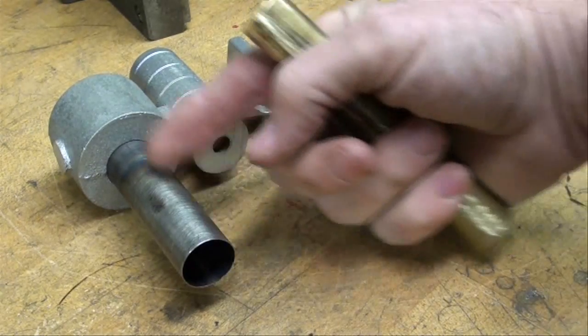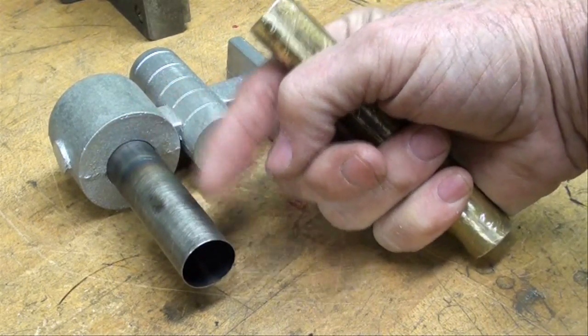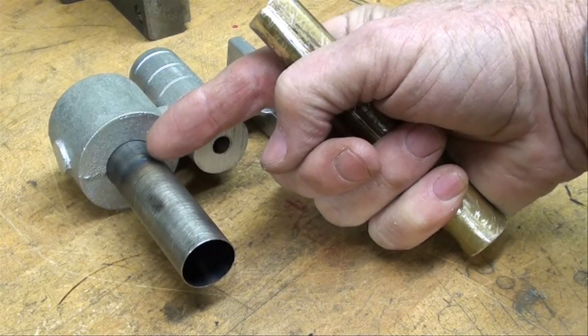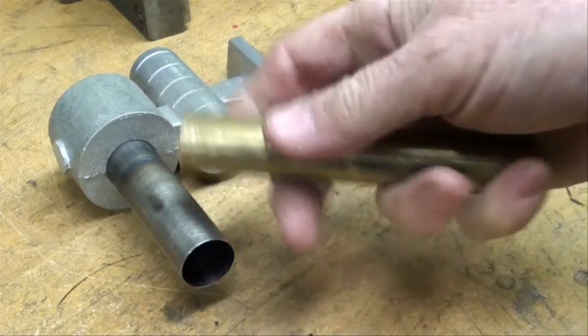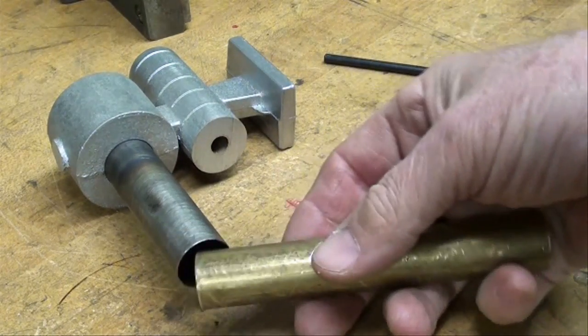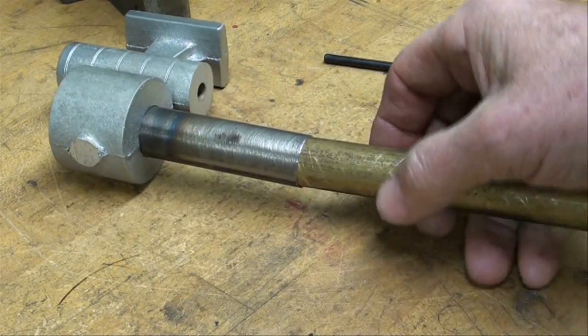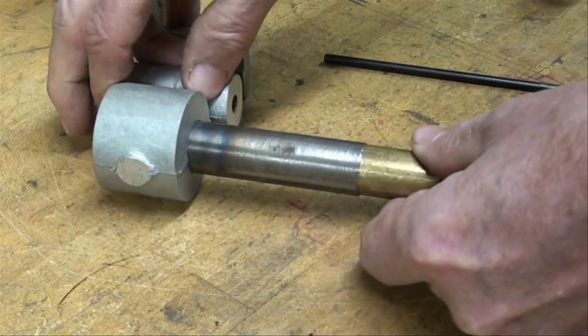I'm going to need to hold this in a vise and I don't want to crush this tubing. This is very thin wall tubing. In fact, that's part of an old push broom handle, and you know how thin they make those things. So I'm going to put a brass rod in there, which I'll call a mandrel, and that will prevent me from crushing it when I pinch it in the drill press vise.